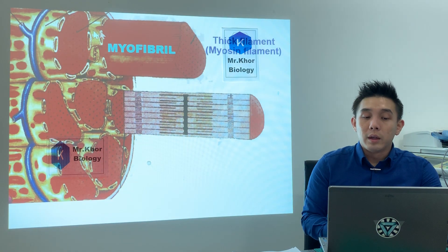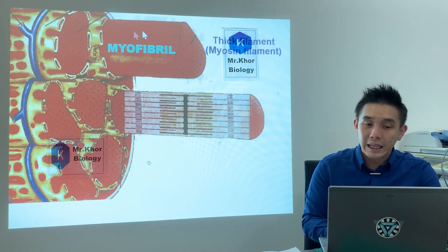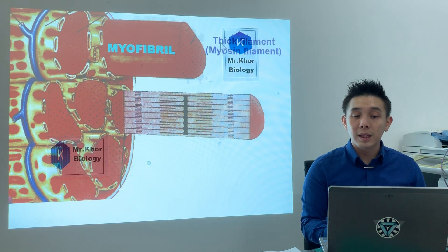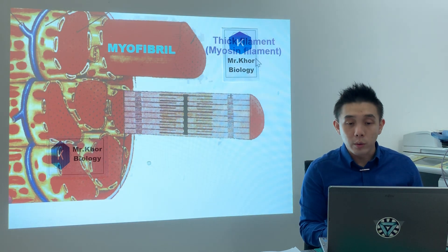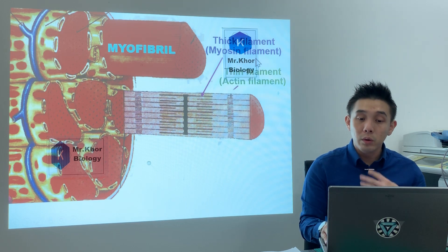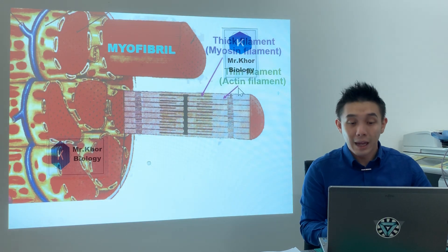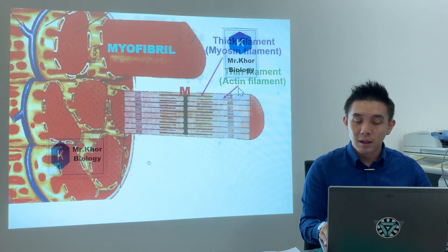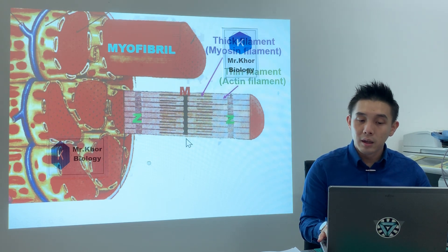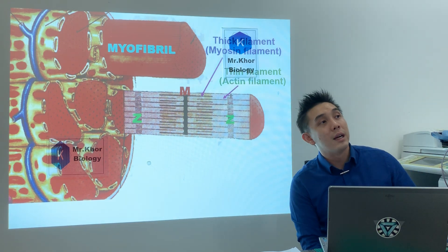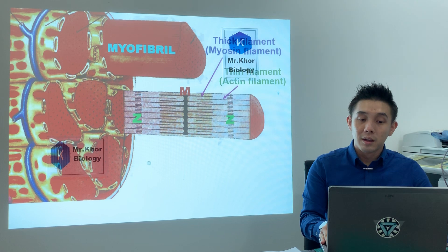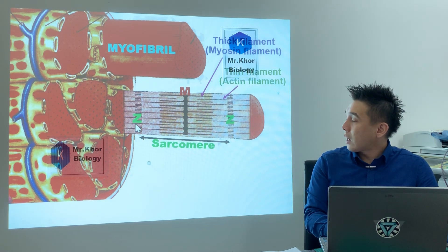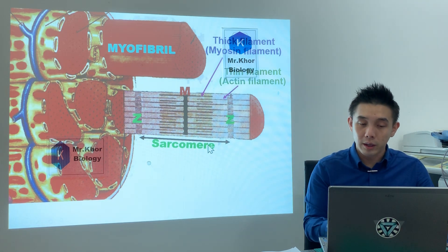In the myofibril, it consists of thick filament which we call myosin, and also thin filament which we call actin. There is the M-line, and the Z-line which we have seen before in AS. One Z-line to another Z-line is known as a sarcomere.